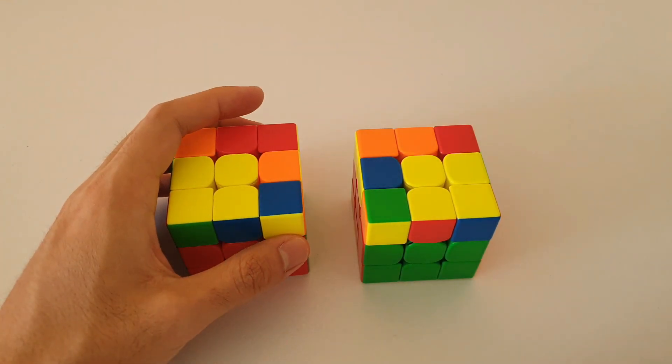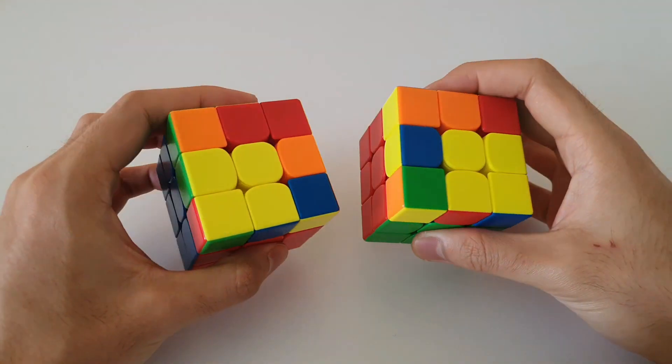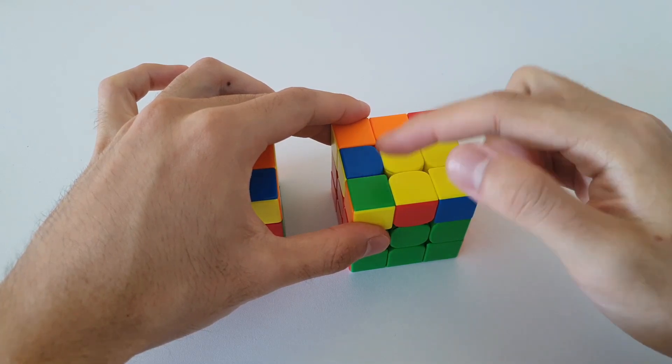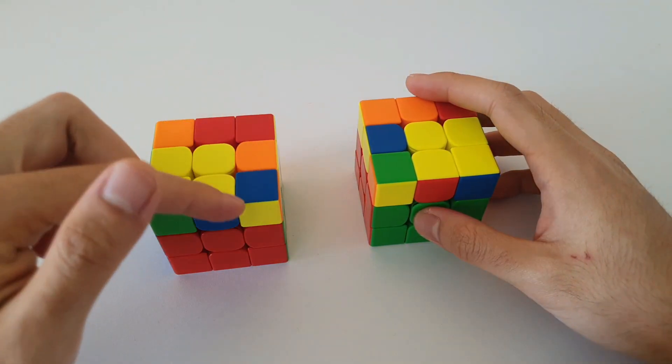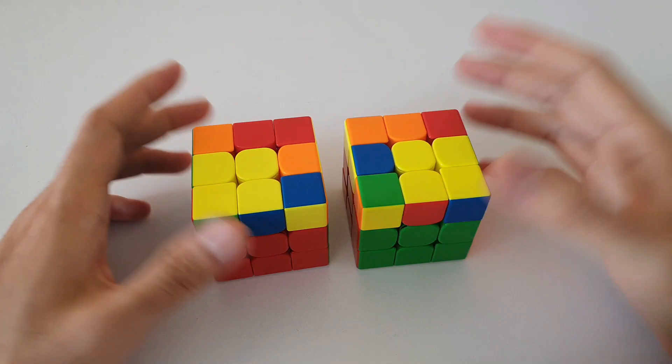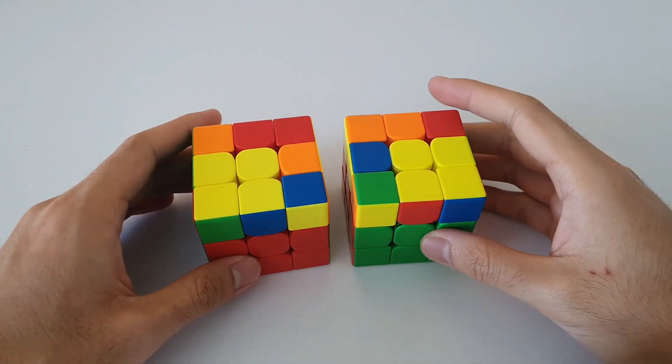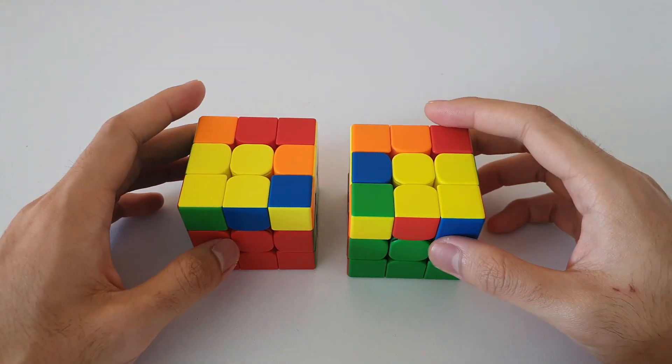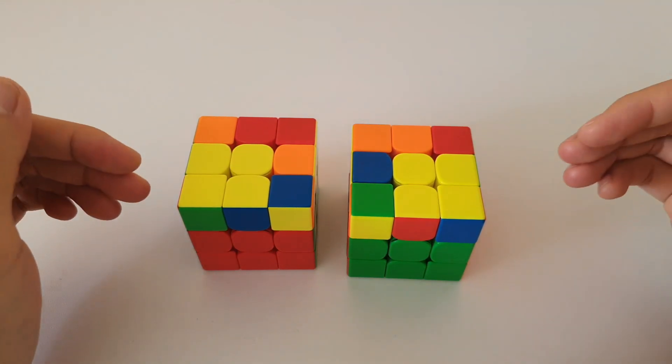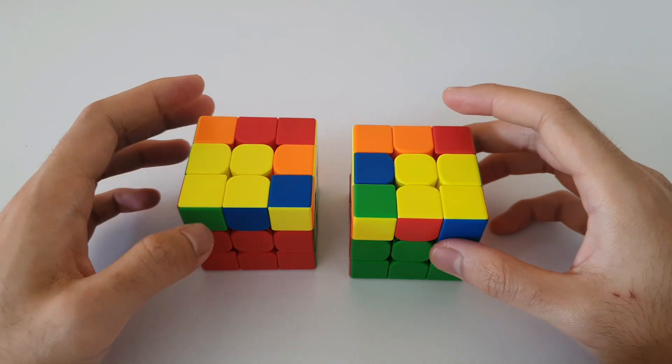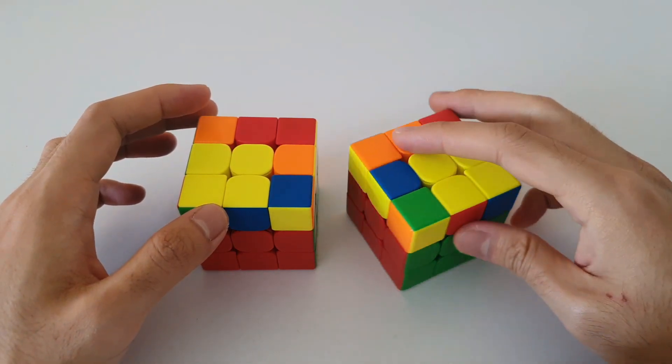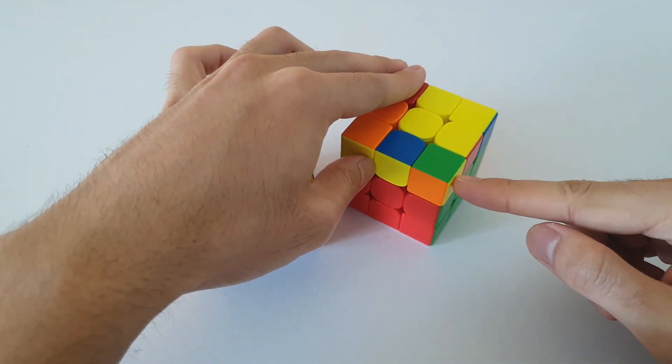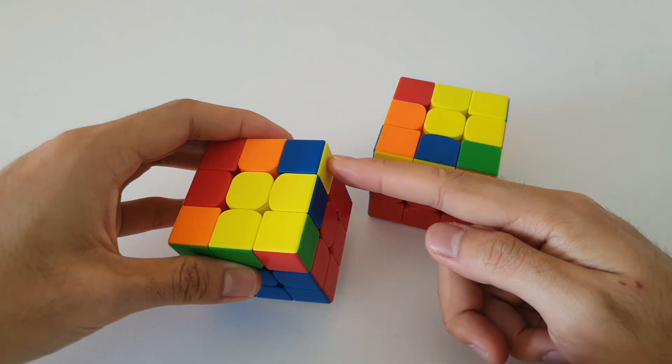So next OLL cases that I want to talk about are these squares. So they're called squares because the yellow on top form these 2x2 squares on the corners, like so. So as you can see, there are two square cases as shown in front of you right now. And it can be a bit confusing because they are mirrors of each other. And so the recognition technique that I use for these cases is actually to hold both squares so that they're on the right side of the cube in a way that the single corner is also facing the right.